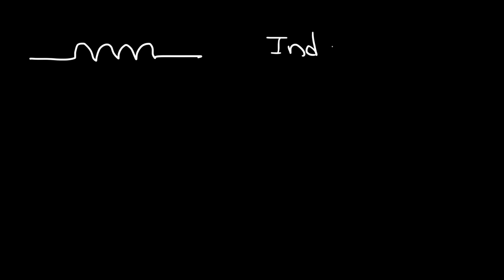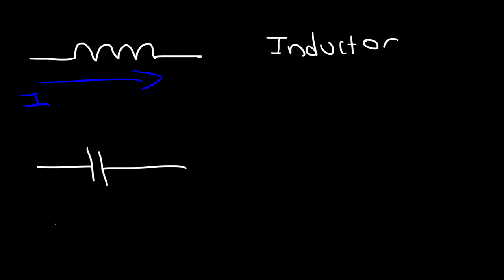The next symbol is the inductor. Electricity can easily flow through an inductor — direct current flows easily through it, but an inductor resists alternating current. Anytime the current is changing, the inductor will oppose that change. A capacitor doesn't allow direct current to flow; there is an insulator inside a capacitor, so DC current does not flow through it. However, a capacitor is used to store electrical energy, and it does pass AC current. No current flows in between, but because alternating current constantly charges and discharges the capacitor, it appears as if it allows AC current to flow.